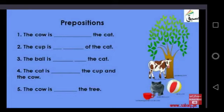Number 5. The cow is dash the tree. The cow is under the tree. Very good.